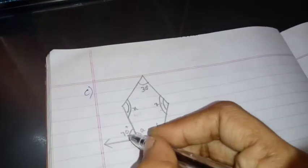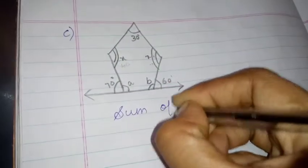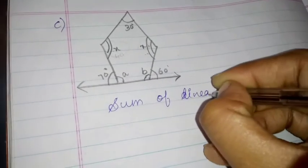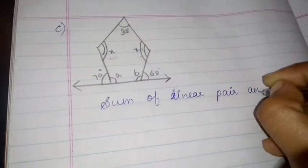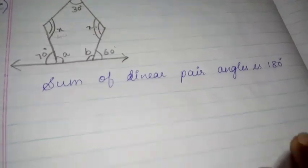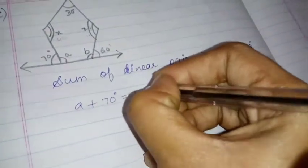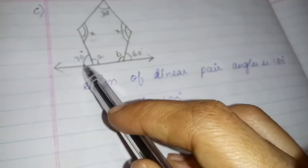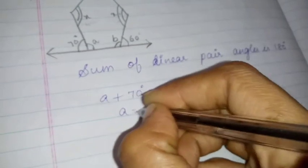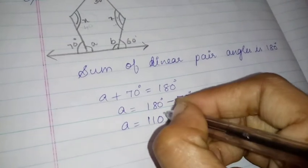Shall we find A? It looks like a linear pair. In this straight line, one arm is there. Sum of linear pair angles is 180. So A plus 70 degrees is equal to 180. So A is equal to 180 minus 70.